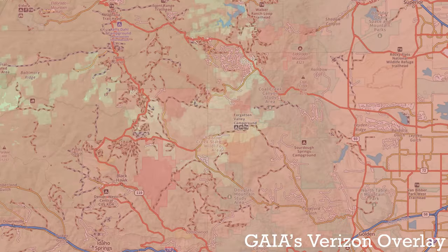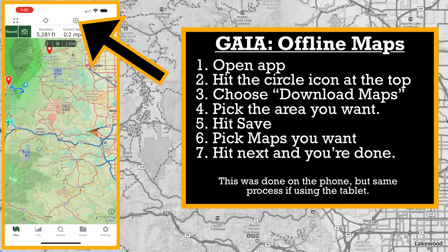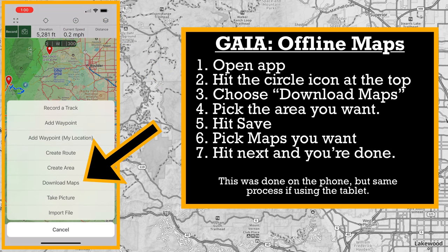Before we leave this spot, we need to download offline maps. We're going into an area with limited cell service. I personally think Gaia GPS is the better program for offline maps, and I'm going to show you on my screen right now as I screen record it and download the maps.